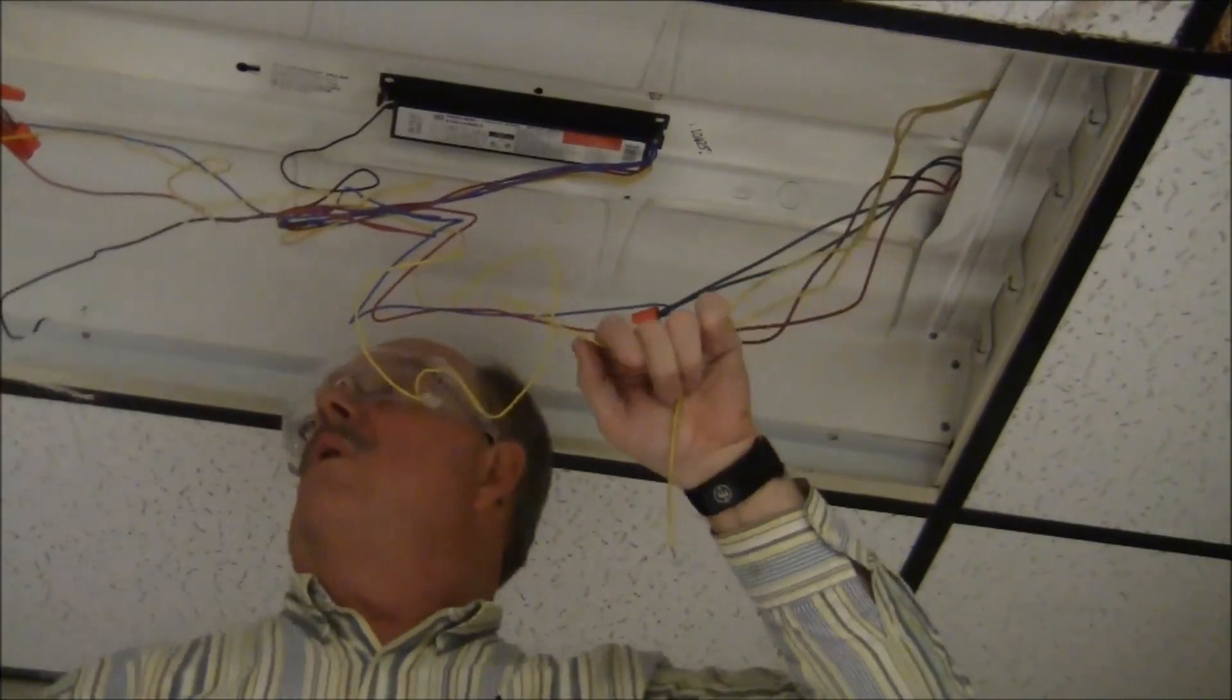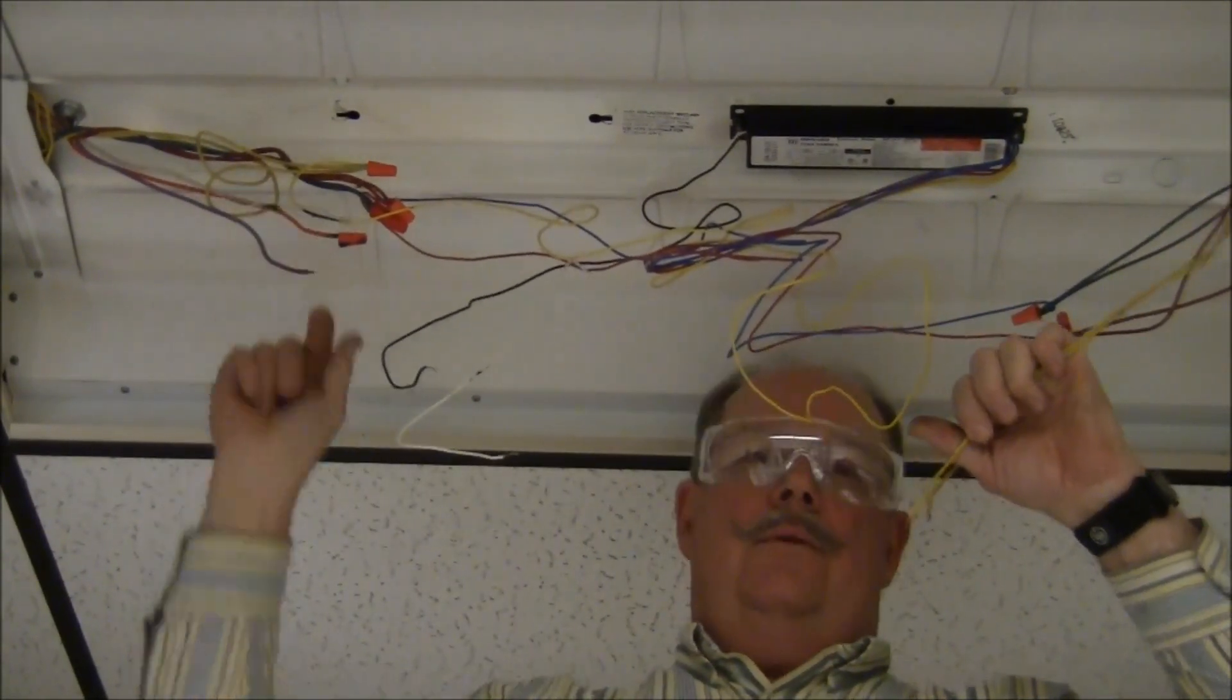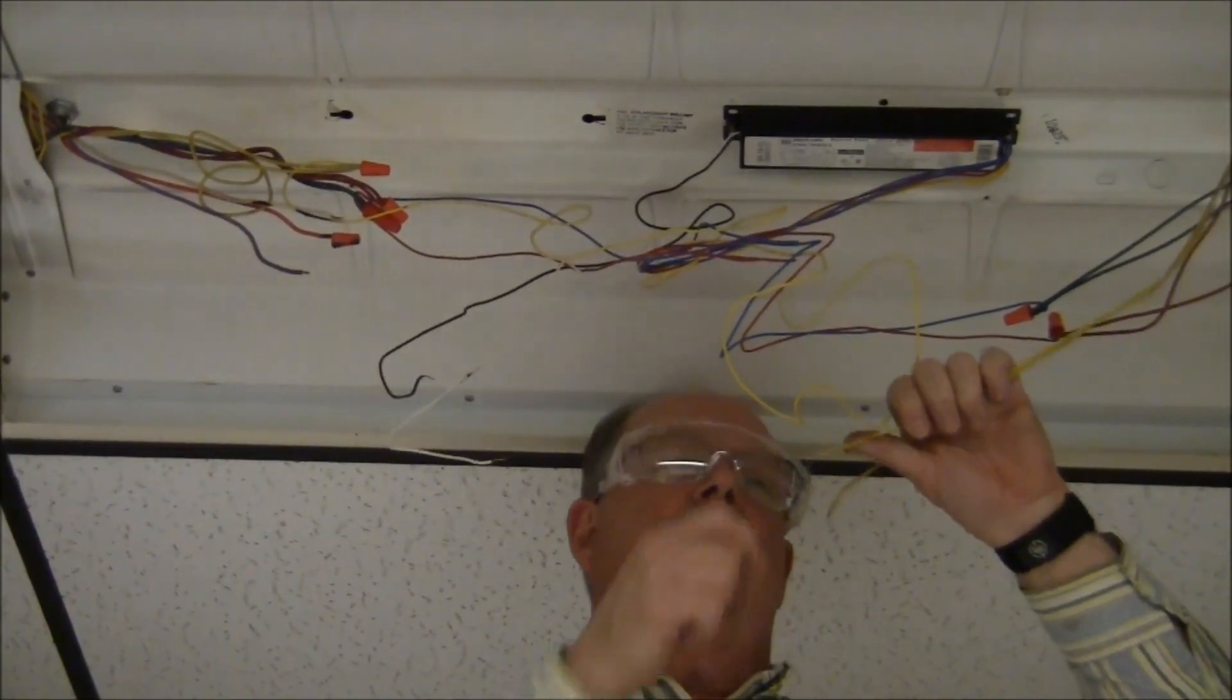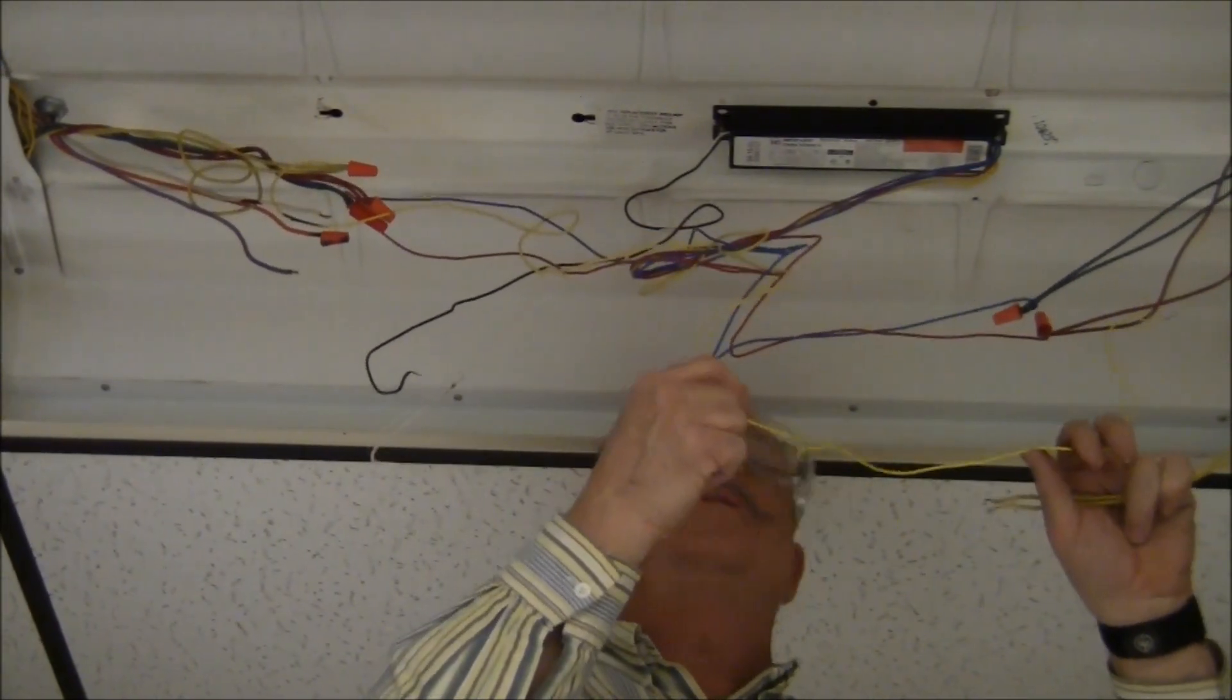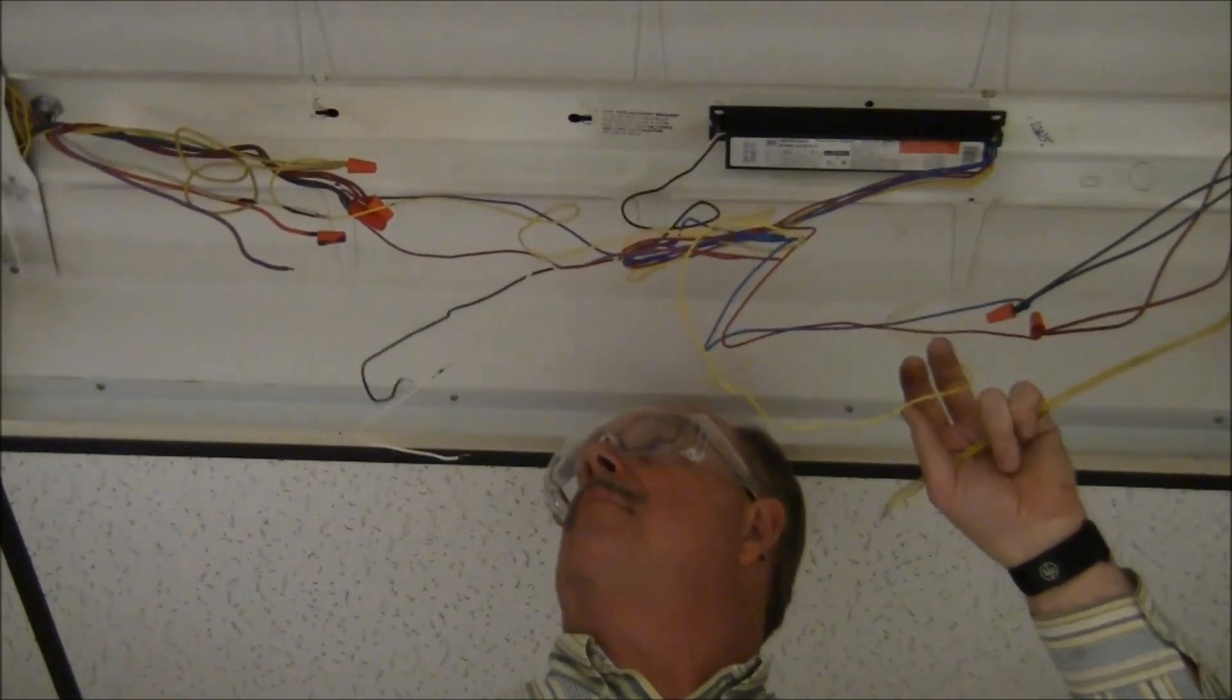One of these yellow wires I'll connect to line, and one of these yellow wires I'll connect to neutral coming into the fixture. In some cases, I can recycle some of these other wires and just make them longer.